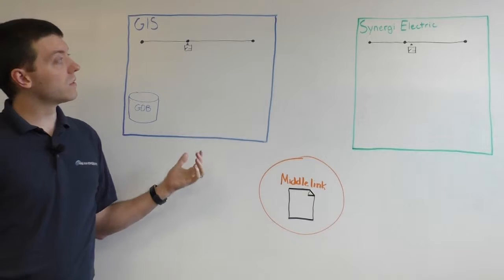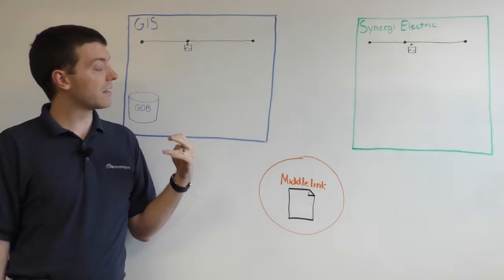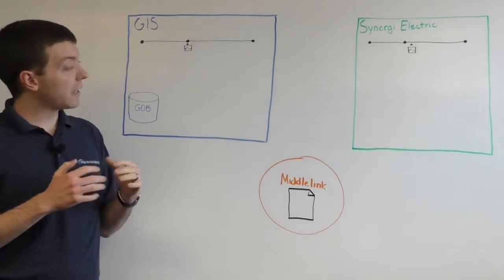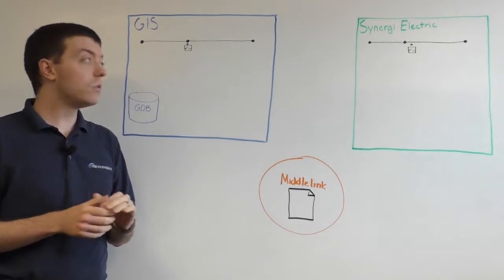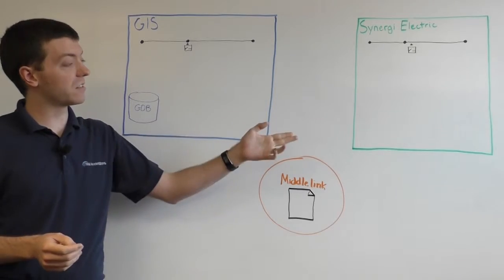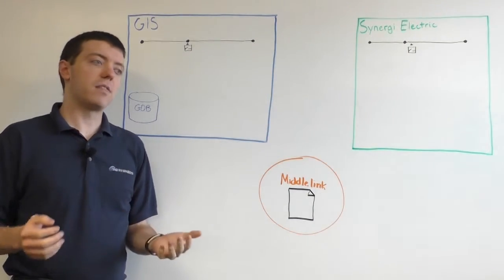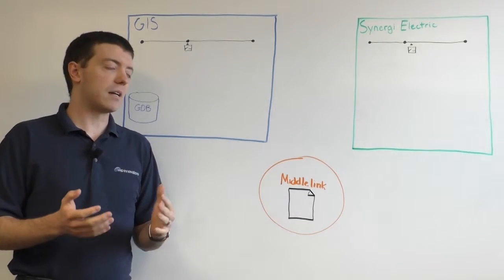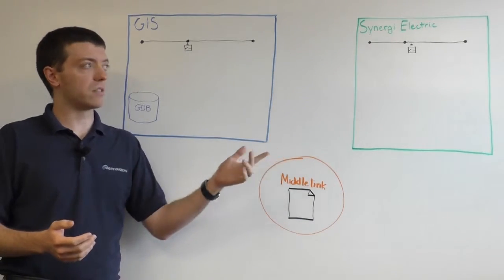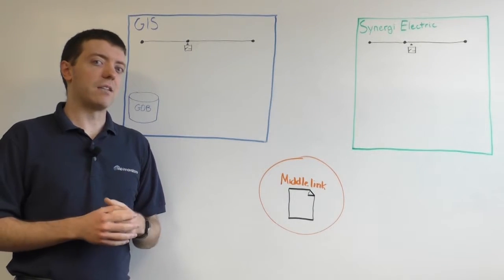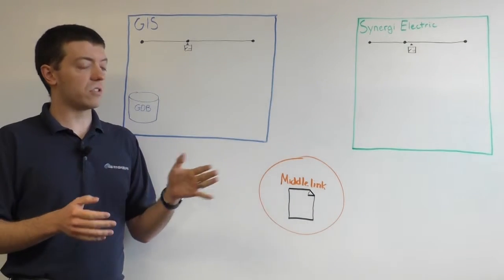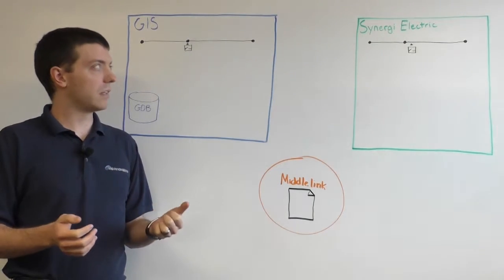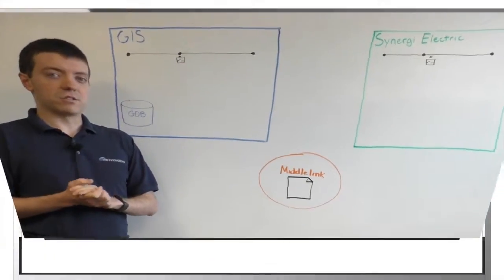So a lot of utilities use Synergy for analysis and to further extend the abilities of their data and their assets in the field, but it can be very difficult to map GIS data to Synergy Electric data. What often happens is this data gets stale in Synergy. The effort that it takes to export this data and import it into Synergy can be difficult. As such, a lot of times the data used in Synergy gets really old and out of date, and it's way too hard for utilities to constantly move new data into Synergy Electric.